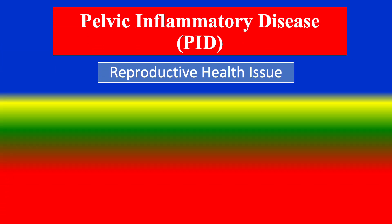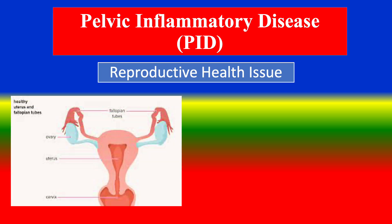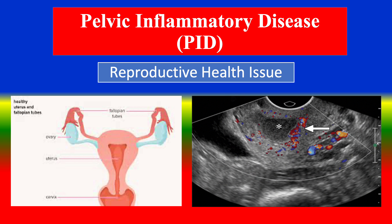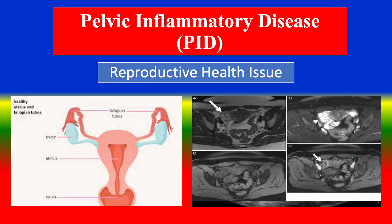Pelvic Inflammatory Disease is a reproductive health issue. Look at this picture showing the uterus, fallopian tubes, and ultrasound findings. Look at this picture and MRI findings — there is detail going on.